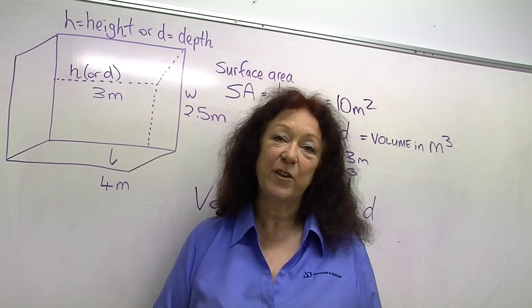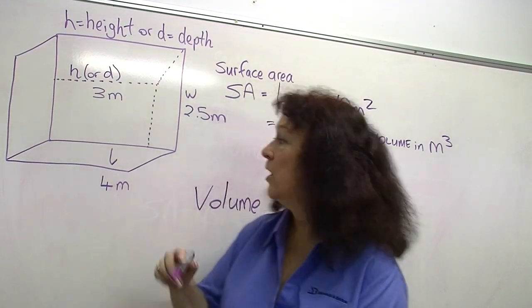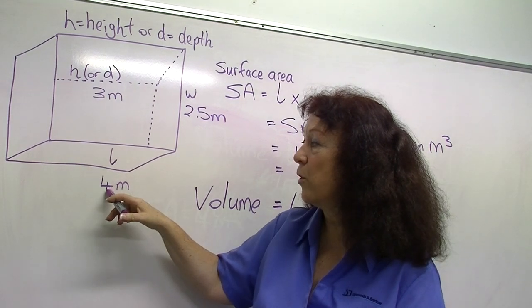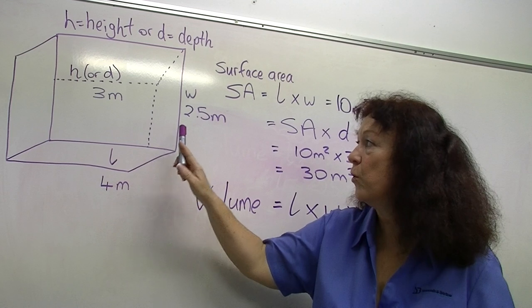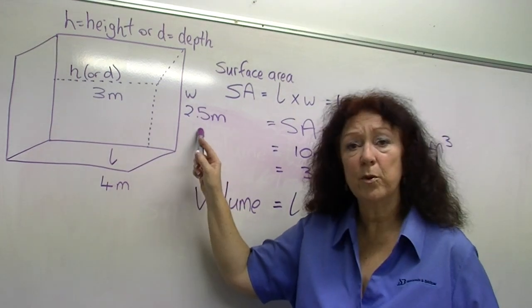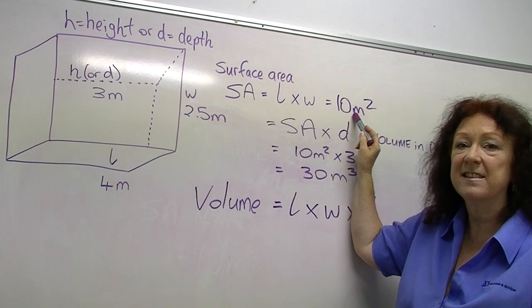Let's take the first case first, where we already know what our surface area is. We worked that out by multiplying the length by the width, and that gave us four meters times 2.5 meters, gave us a surface area of 10 square meters.